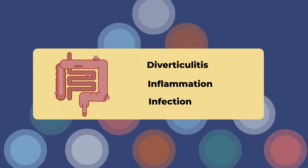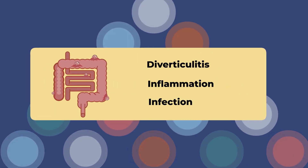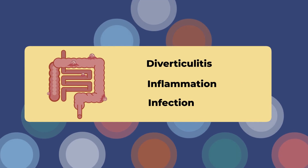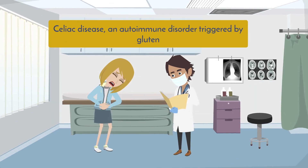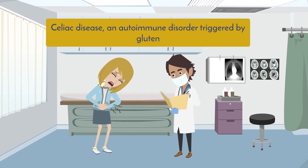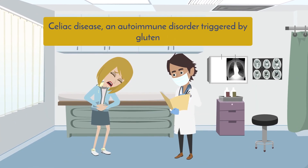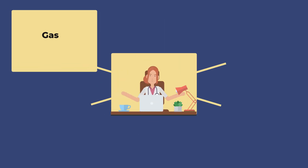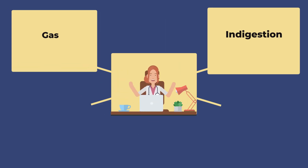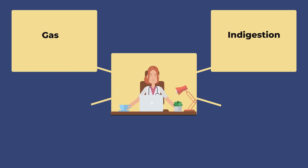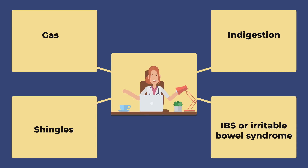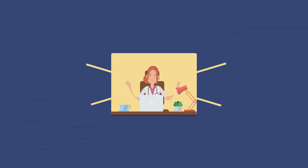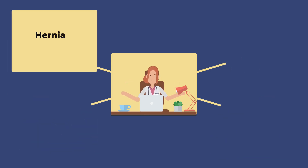Diverticulitis — inflammation and infection of the intestinal wall. Celiac disease, an autoimmune disorder triggered by gluten. Gas. Indigestion. Shingles. IBS or irritable bowel syndrome. Hernia.